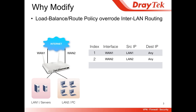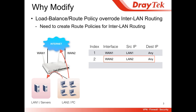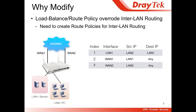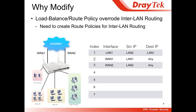But what if your LAN2 clients want to access the servers in LAN1? Since we have a policy that says when LAN2 clients go anywhere, traffic should be sent through WAN2 — we were not able to access the LAN1 server. In order to access the servers in LAN1, we need to create another route policy for this inter-LAN routing scenario. You need to move down the policies and create a rule: when LAN2 goes to LAN1, send through LAN1. But what if we have more than one subnet? It will become more trouble — you have to create so many rules for inter-LAN routing.